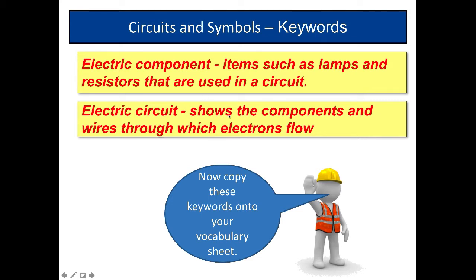Electric circuit shows components and wires through which electrons will flow. So we drew a second ago a circuit diagram showing a cell, a bulb and a switch. And they're also connected by straight lines which are wires. So I suggest you copy down these key words onto your vocab sheet and learn them.